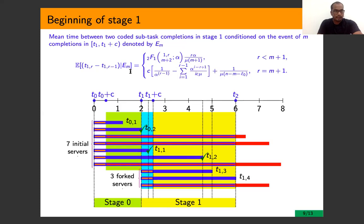Combining these two results, we can find the closed-form expressions for mean completion time and mean utilization cost.